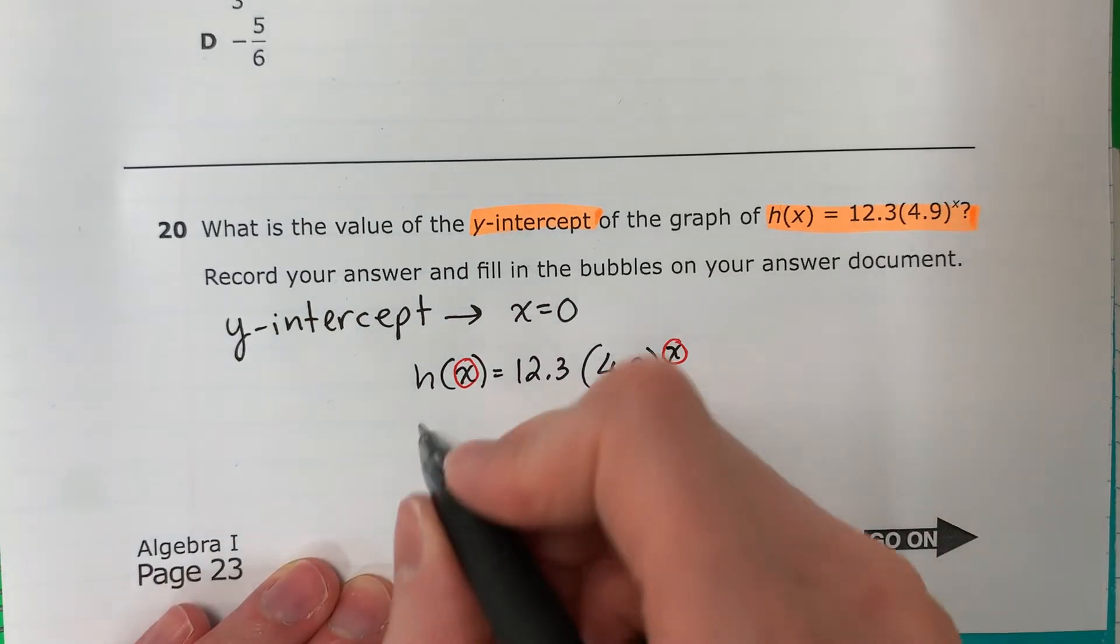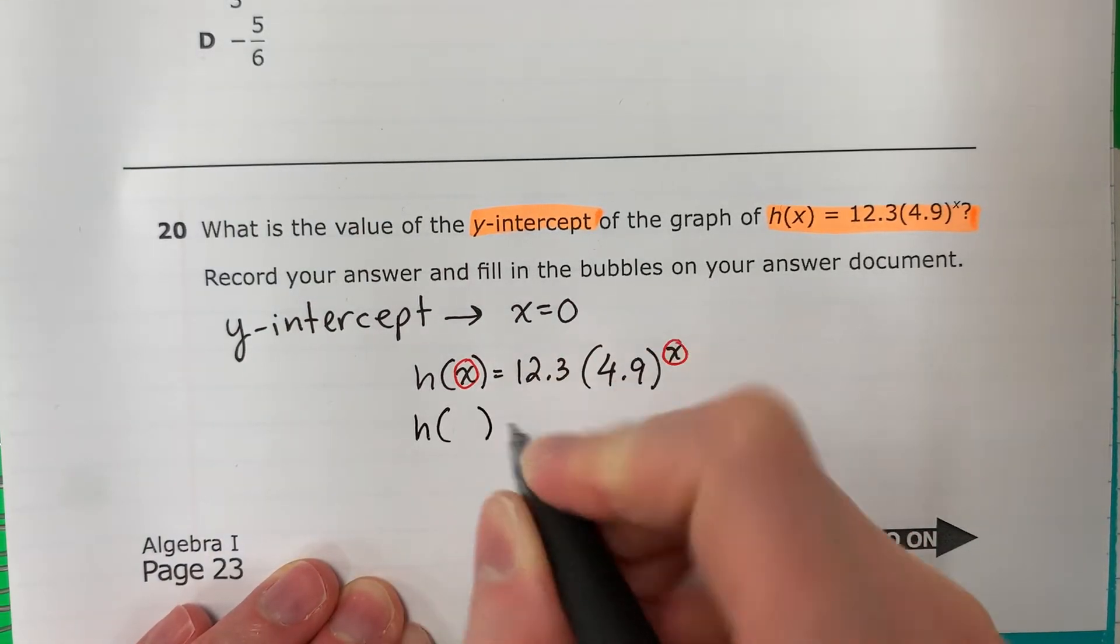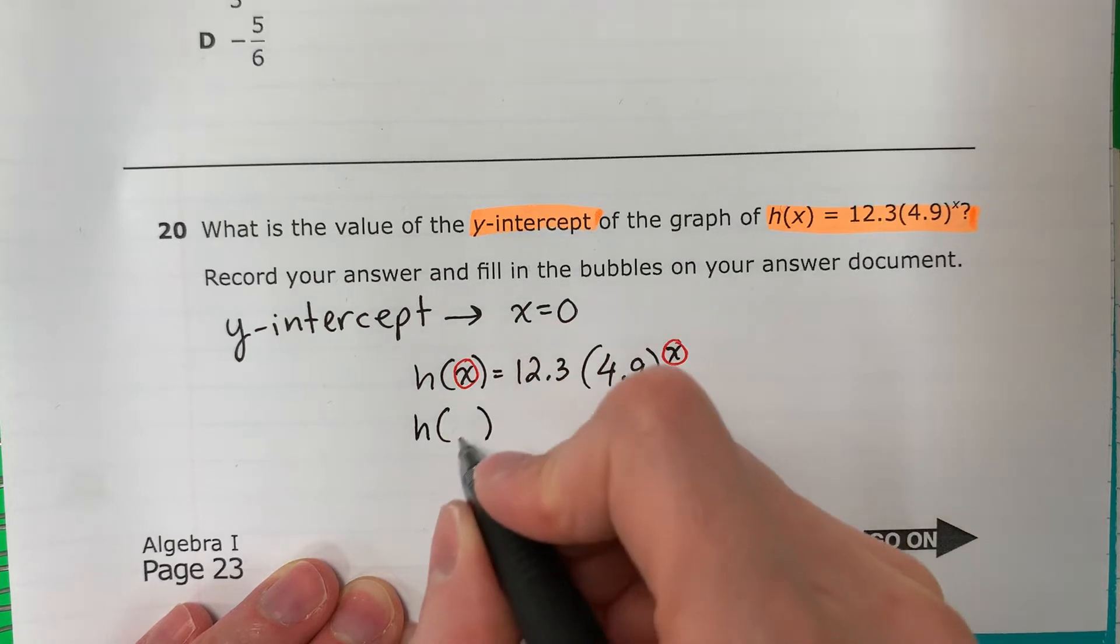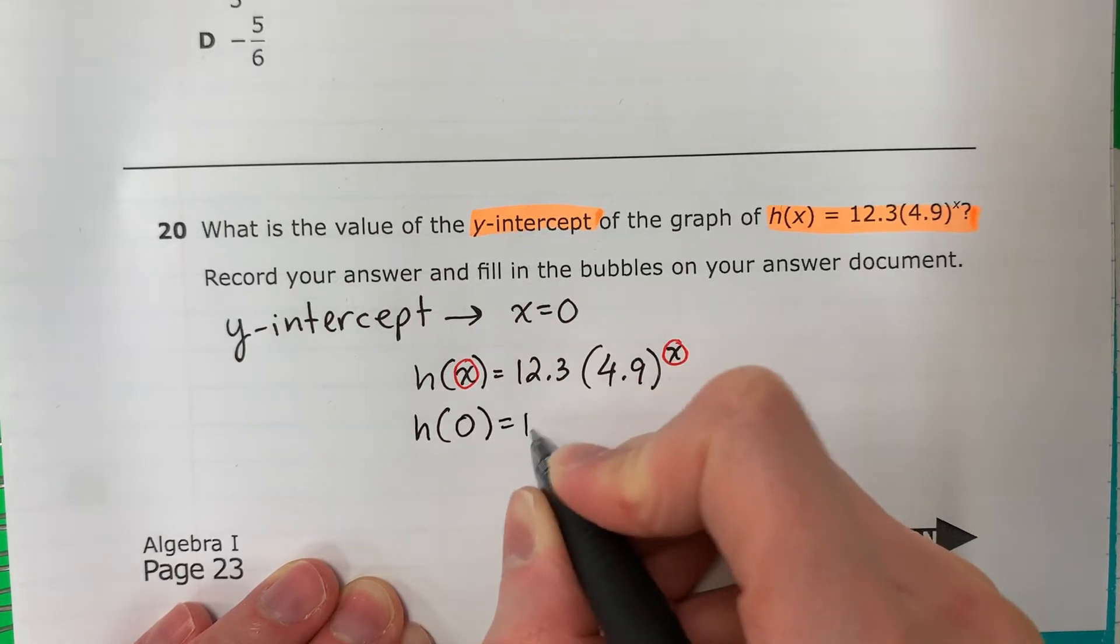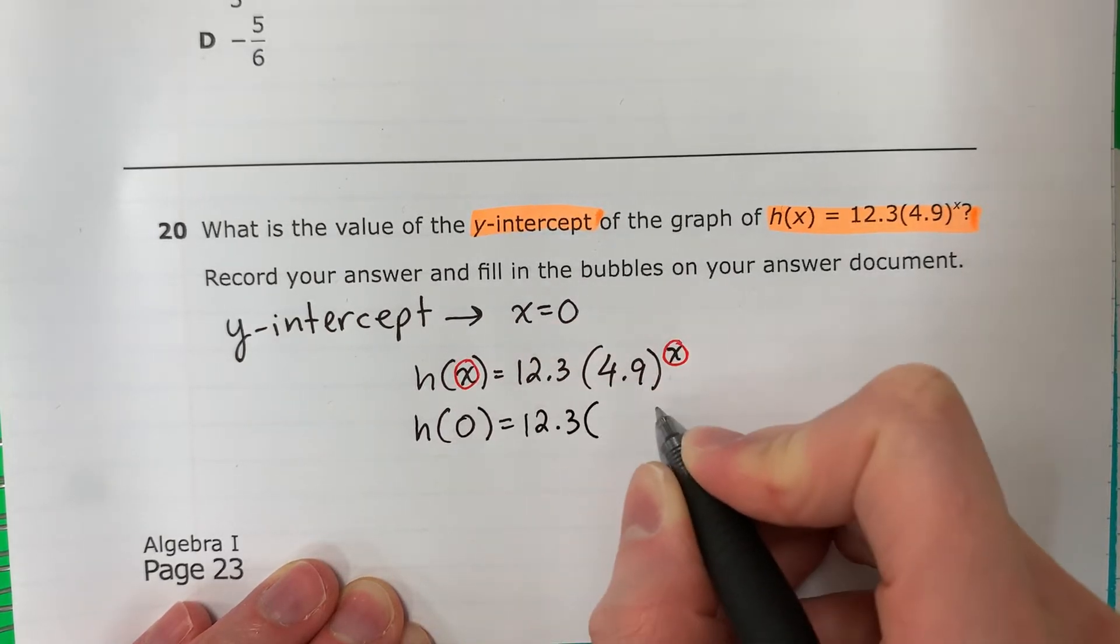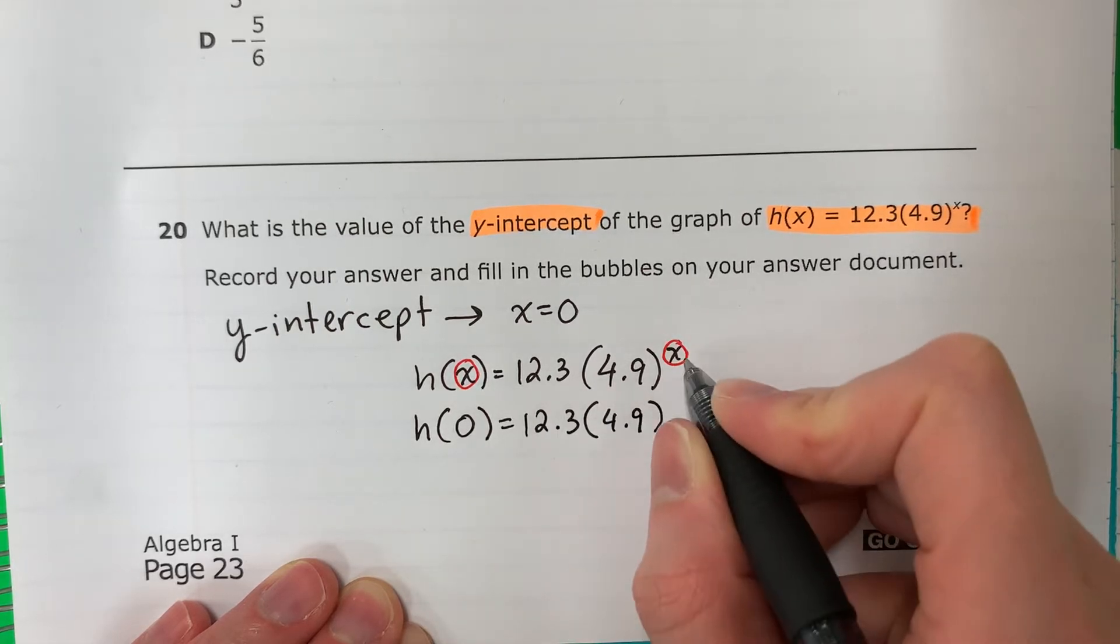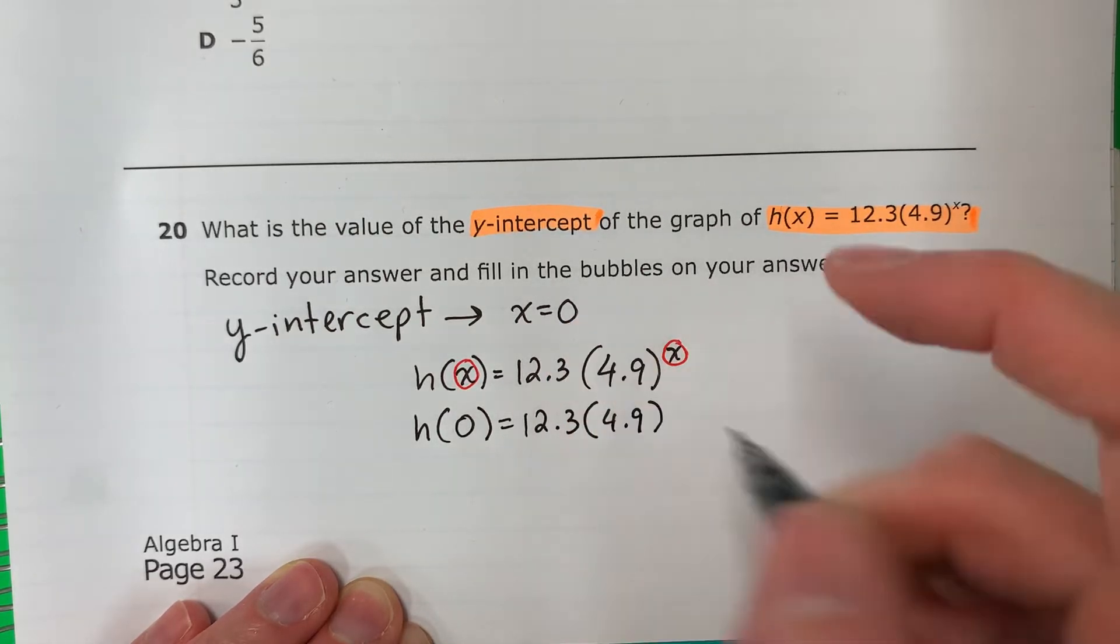So I'm going to copy h, parenthesis, 0, equals, copy 12.3, copy parenthesis 4.9, all of it copied, but no x, 0.